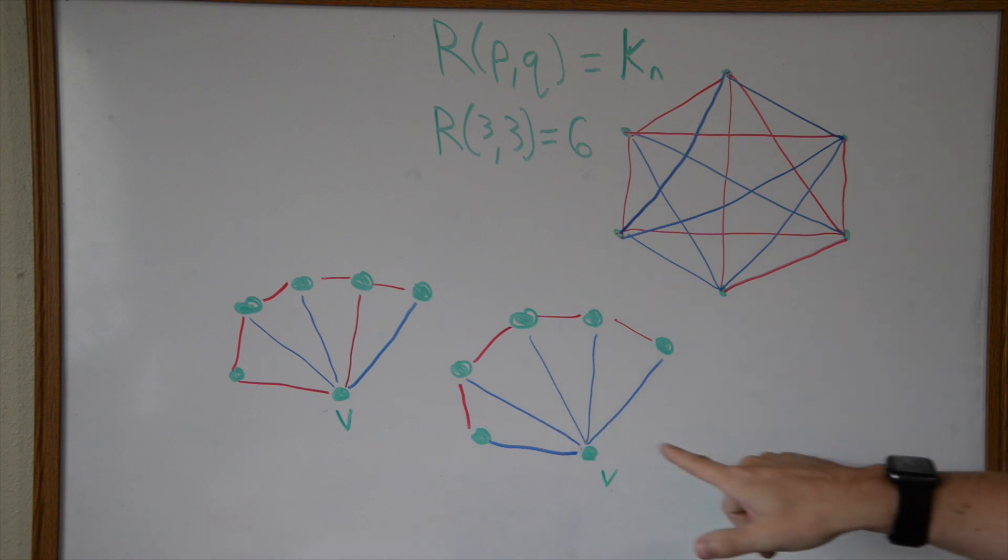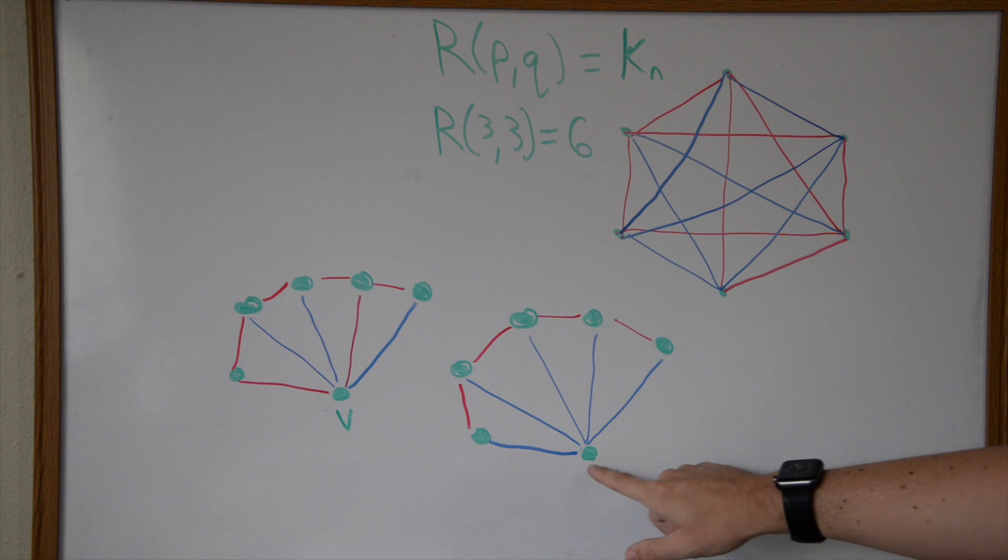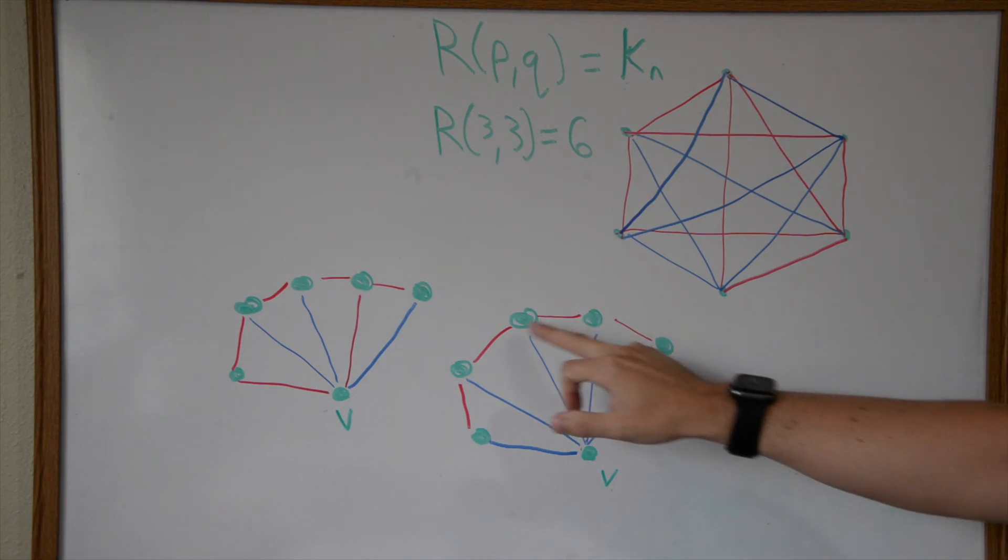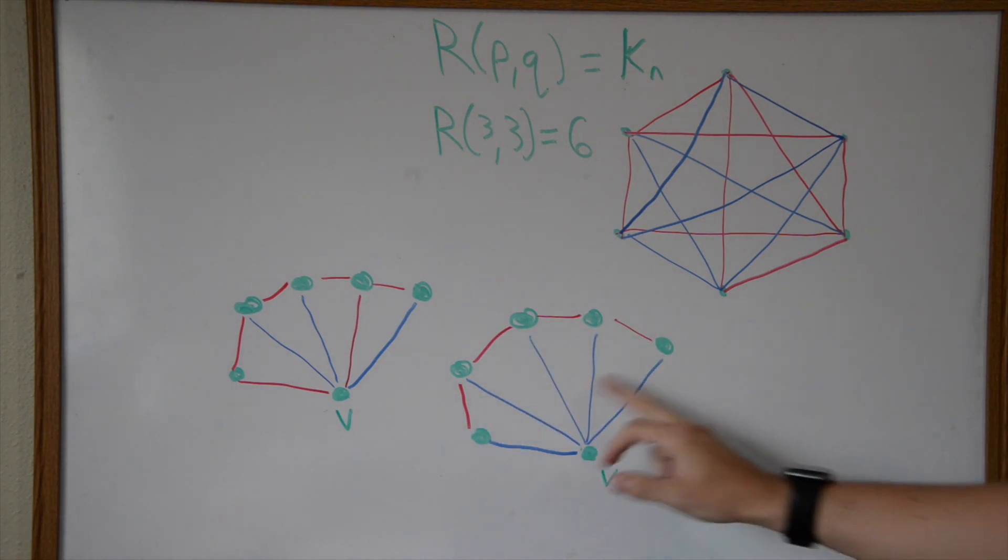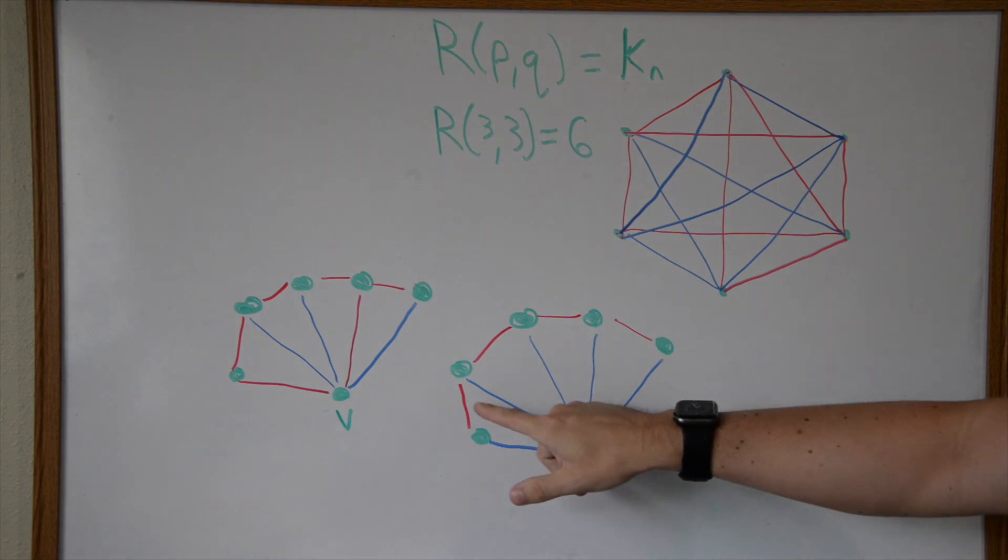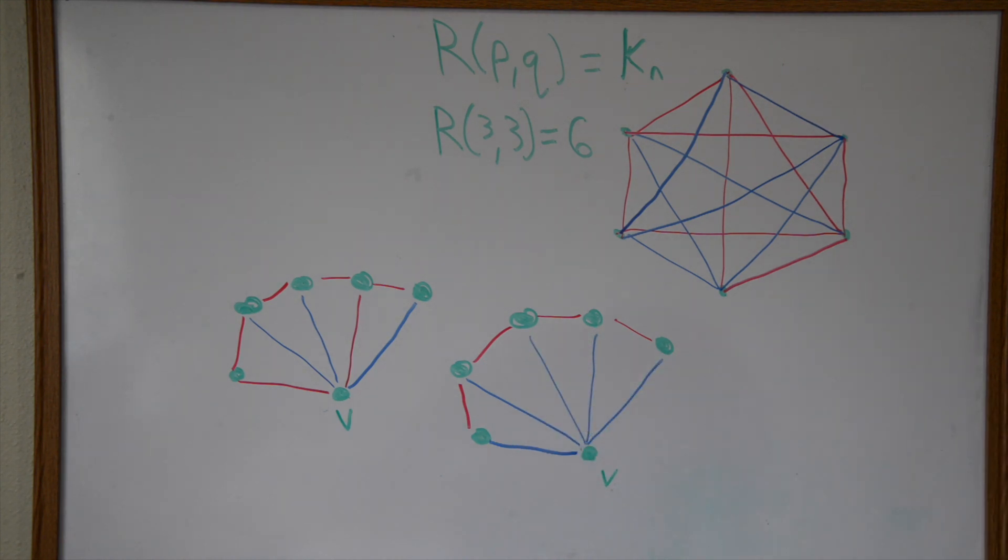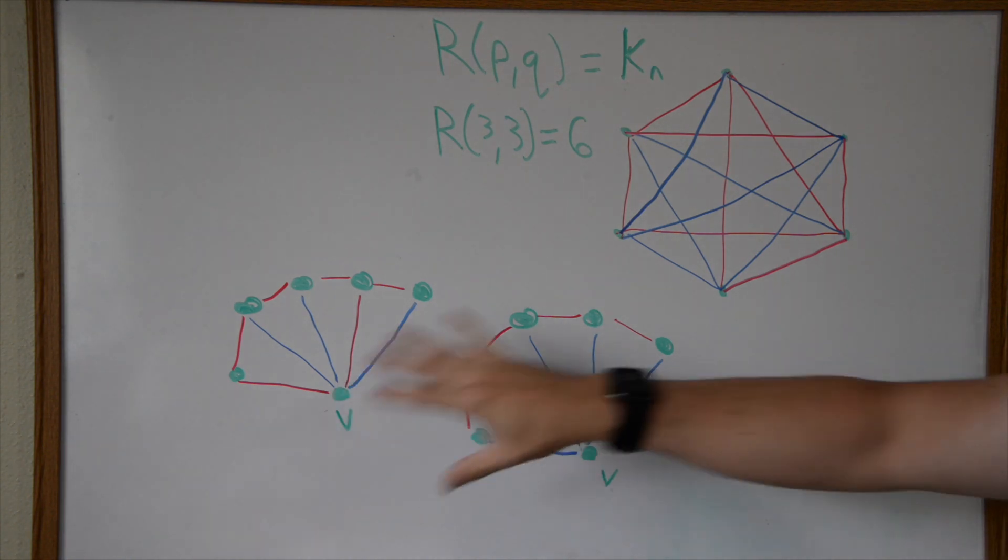I've drawn basically the two scenarios that we have. Let's talk about this one first. All of these are blue, but the same logic applies for if all of its incident edges were red as well. I've colored all of these red just to show it different from this, because obviously if these edges were also blue as well then we'd be done - we'd have made a blue triangle.